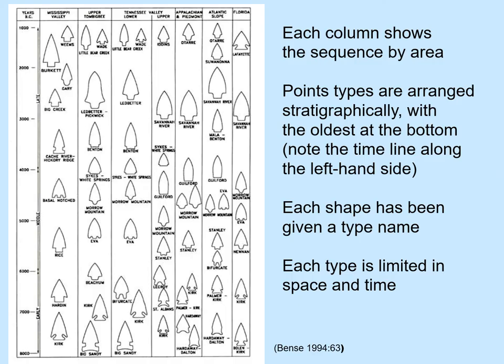Here's another chart showing a stylistic seriation that clearly shows how points are arranged both stratigraphically — from oldest at the bottom to more recent moving up — and also geographically, going across different areas such as Florida, the Atlantic slope, the Appalachian, and the Piedmont. Points are arranged stratigraphically with the oldest at the bottom, arranged geographically, each shape given a type name, and each type limited in space and time.